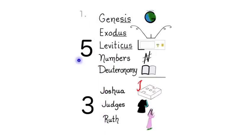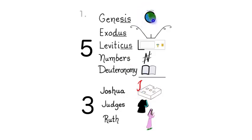To connect the two groups of Section 1, think: Genesis and Joshua both start with a J sound — for Genesis and Joshua.